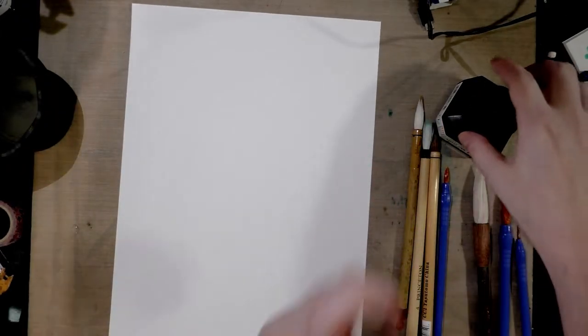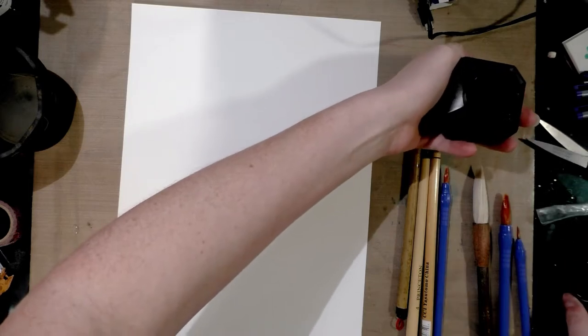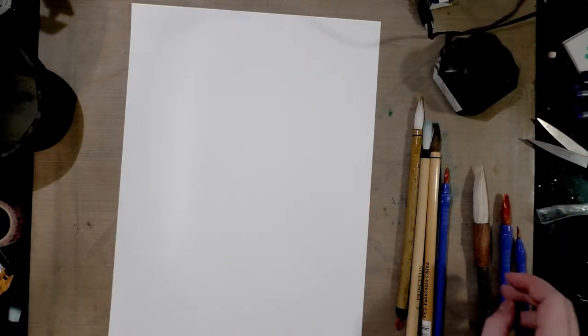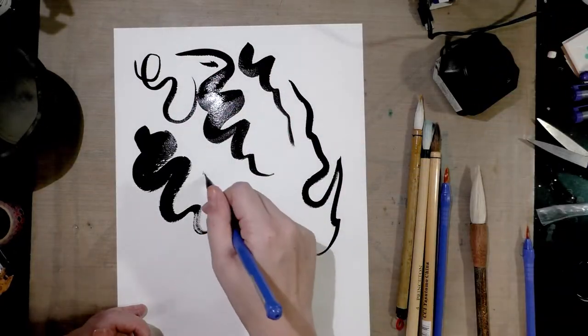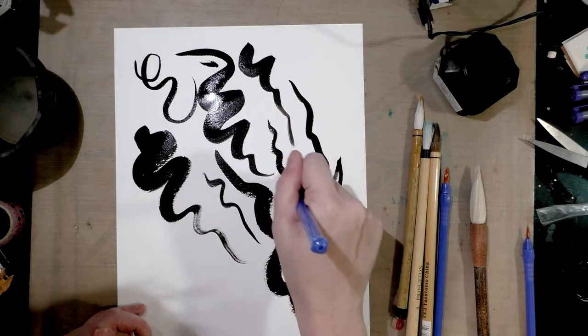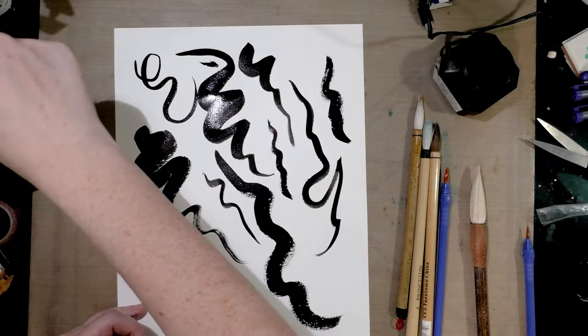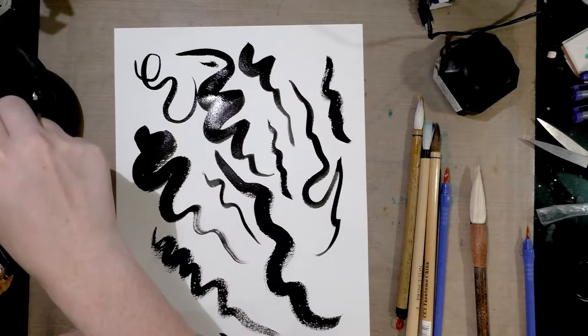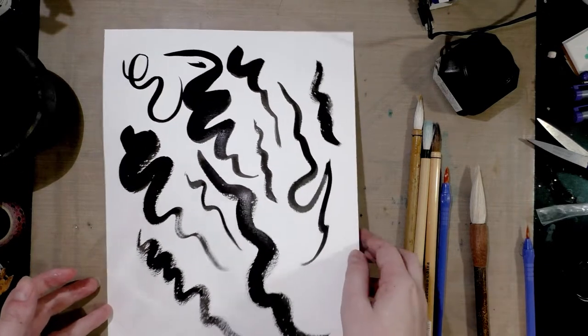All right, so cheap Canson paper. I'm going to use Kuretake Sumi ink. We'll start with the largest Neo Sable. Good amount of wax. Can put down a fairly thick line. You can also get some nice dry brush with it. Clean that out.